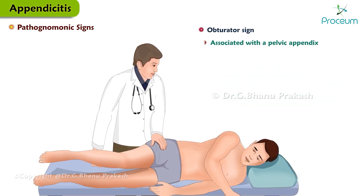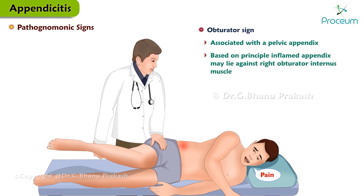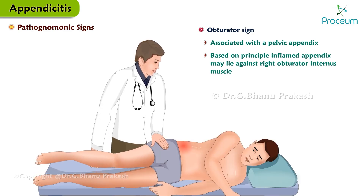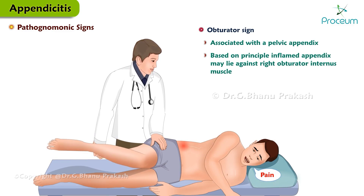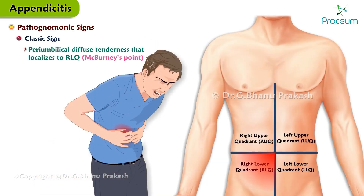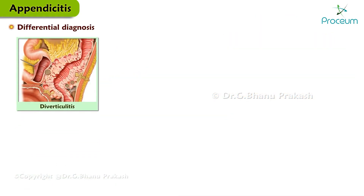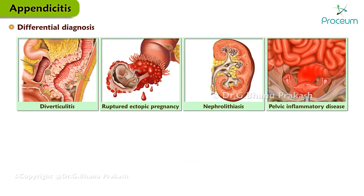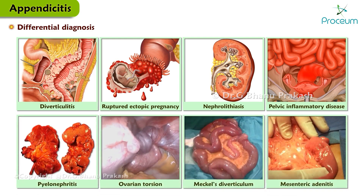The obturator sign is associated with a pelvic appendix. It is based on the principle that the inflamed appendix may lie against the right obturator internus muscle. When the clinician flexes the patient's right hip and knee followed by internal rotation of the right hip, this elicits right lower quadrant pain. The classic sign of appendicitis is periumbilical diffuse abdominal tenderness that localizes to the right lower quadrant at McBurney's point. The differential diagnosis includes diverticulitis, ruptured ectopic pregnancy, nephrolithiasis, pelvic inflammatory disease, pyelonephritis, ovarian torsion, Meckel's diverticulum, and mesenteric adenitis.